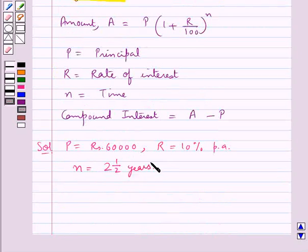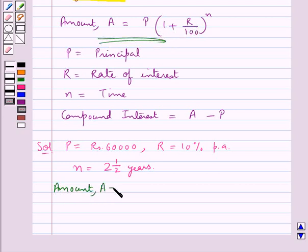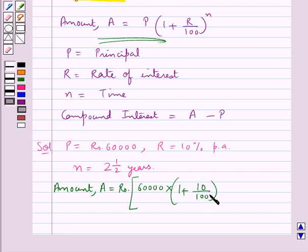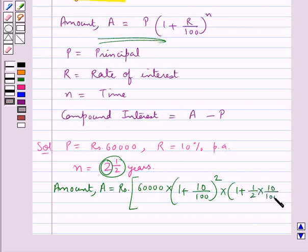Now observe that time is given in fractions. We substitute the values for P, R, and N in the formula for amount. So we get A is equal to Rs 60,000 into 1 plus 10 upon 100, whole to the power N. Since N is in fractions, we write 1 plus 10 upon 100 whole to the power 2, into 1 plus 1 upon 2 into 10 upon 100.